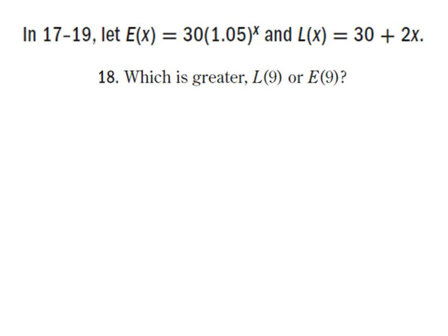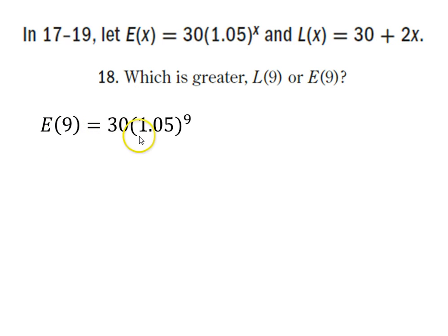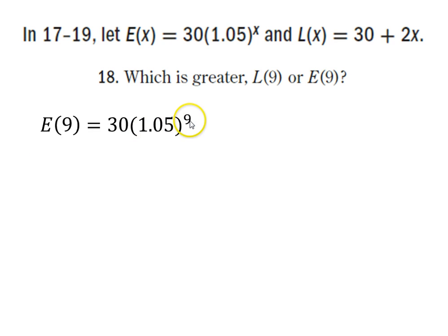For problem 18, we're asked which is greater: L of 9 or E of 9? Now we're doing algebra — just plugging things in and seeing what's bigger. For E of 9: E of 9 equals 30 times 1.05 to the 9th power. Be careful with order of operations — 1.05 is the base of the exponent, and 30 is not part of that base. Plugging that into a calculator gives us 46.54, so E of 9 is 46.54.